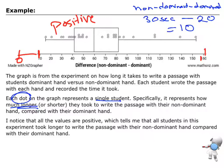So because all the values are positive, that means that this non-dominant hand is bigger than my dominant hand. And how I can work that out is like the example I've just done above. Non-dominant is 30 minus dominant is 20. That gives you a positive number.